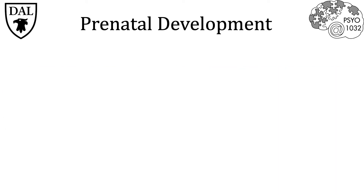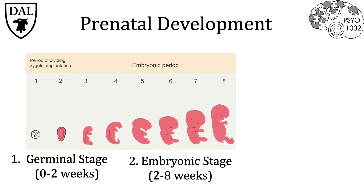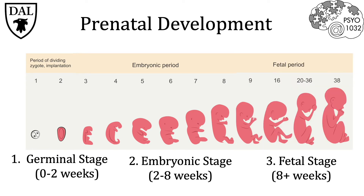Prenatal development can be broken down into three major stages. The first is the germinal stage, which lasts from conception to about two weeks post-conception. This is followed by the embryonic stage, which lasts from two weeks to eight weeks post-conception, and then finally the fetal stage, which lasts from about eight weeks post-conception to birth.